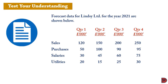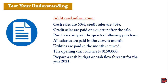This is a forecast for Lince Limited for the year 2021. Sales are: 120,000 for Q1, 150,000 for Q2, 200,000 for Q3, and 250,000 for Q4. Purchases are: 50,000, 100,000, 90,000, and 95,000. Salaries are: 30,000, 45,000, 60,000, and 75,000. Utilities are: 20,000, 15,000, 25,000, and 30,000.